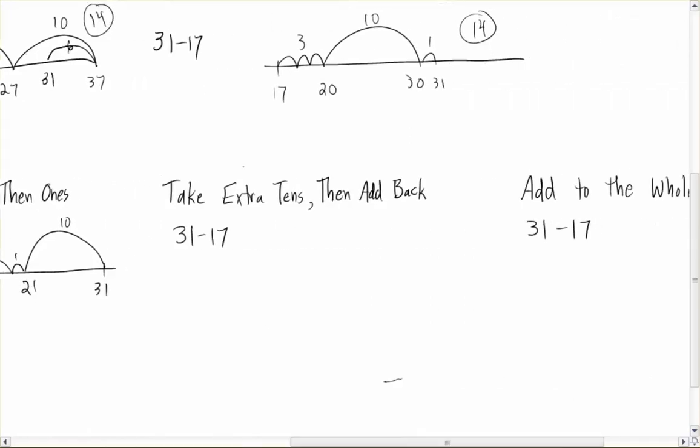I could also think about taking extra tens and then adding back. So if I start at 31 and I need to take away 17, let's just go ahead and take away 20 right away. That would get me down to 21, get me down to 11. Well, that's 3 too far, so I'll jump back 3 and I'll be at 14.